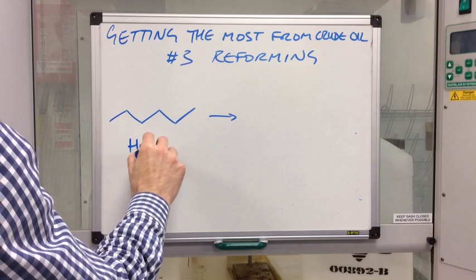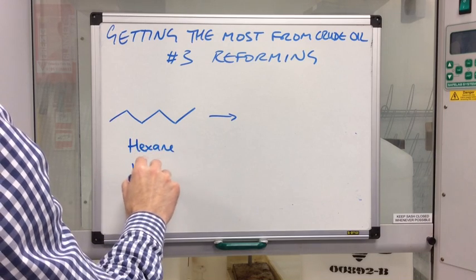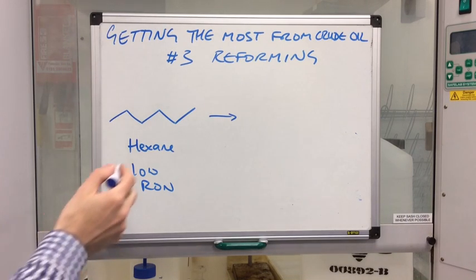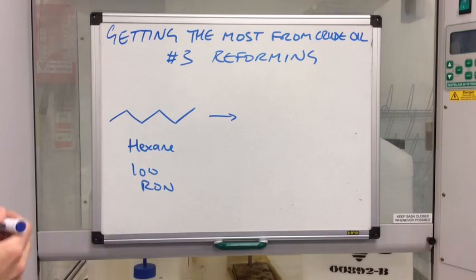It's going to have a low RON value, won't combust very efficiently. So this is slightly different to isomerization. So instead of forming a branched isomer, reforming actually produces cyclic isomers.